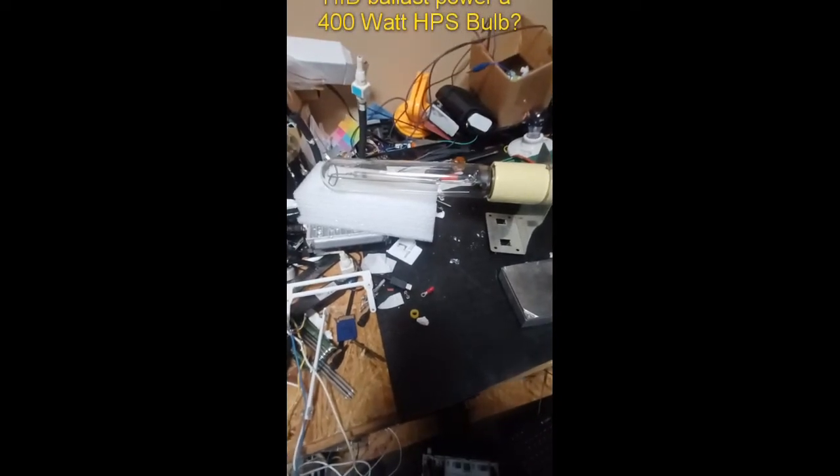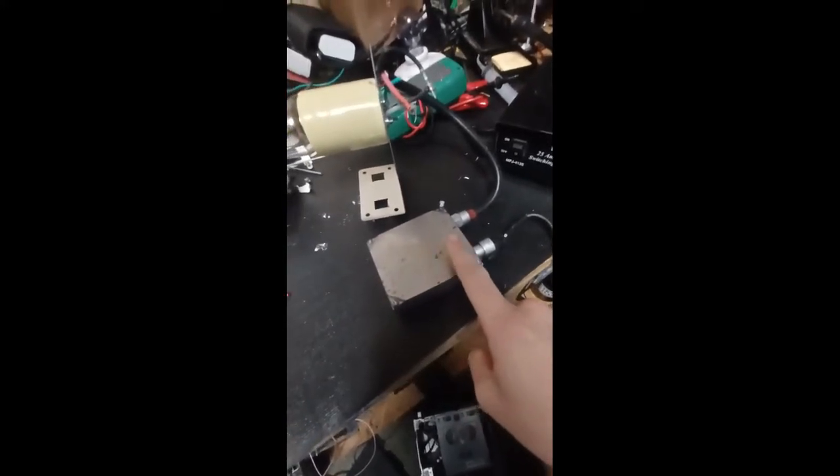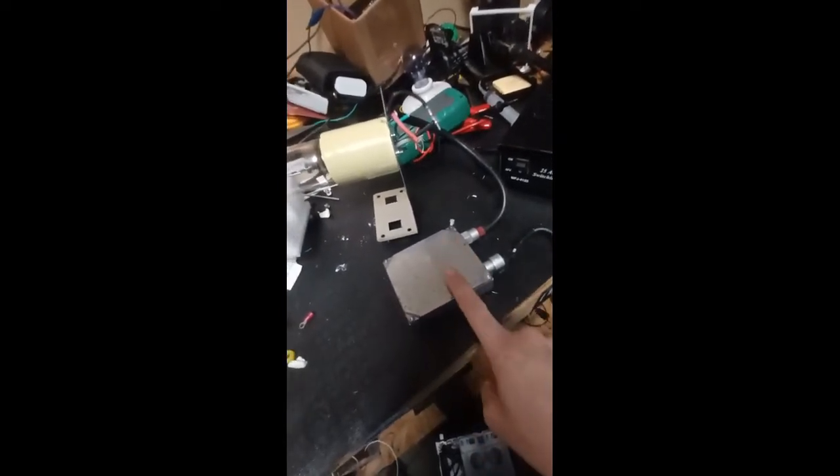All right, Clive, I've got a question for you. A co-worker gave me this. This is an HID power source that runs off 12 volts—MFG Mighty Light, 25 amps, 12 volts.